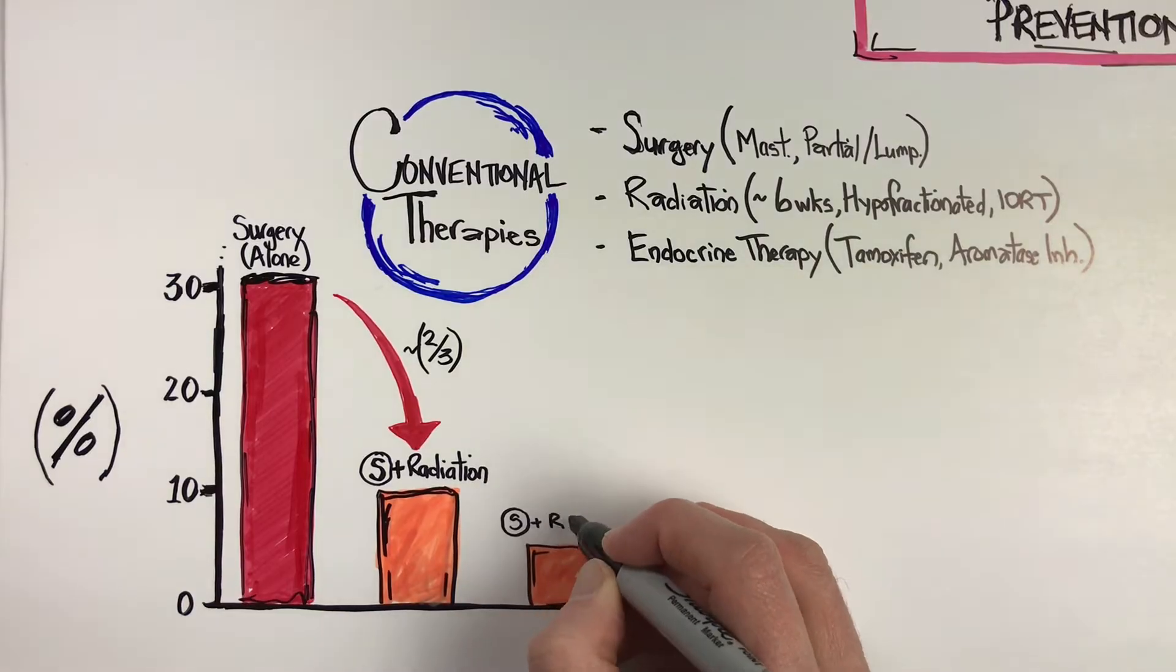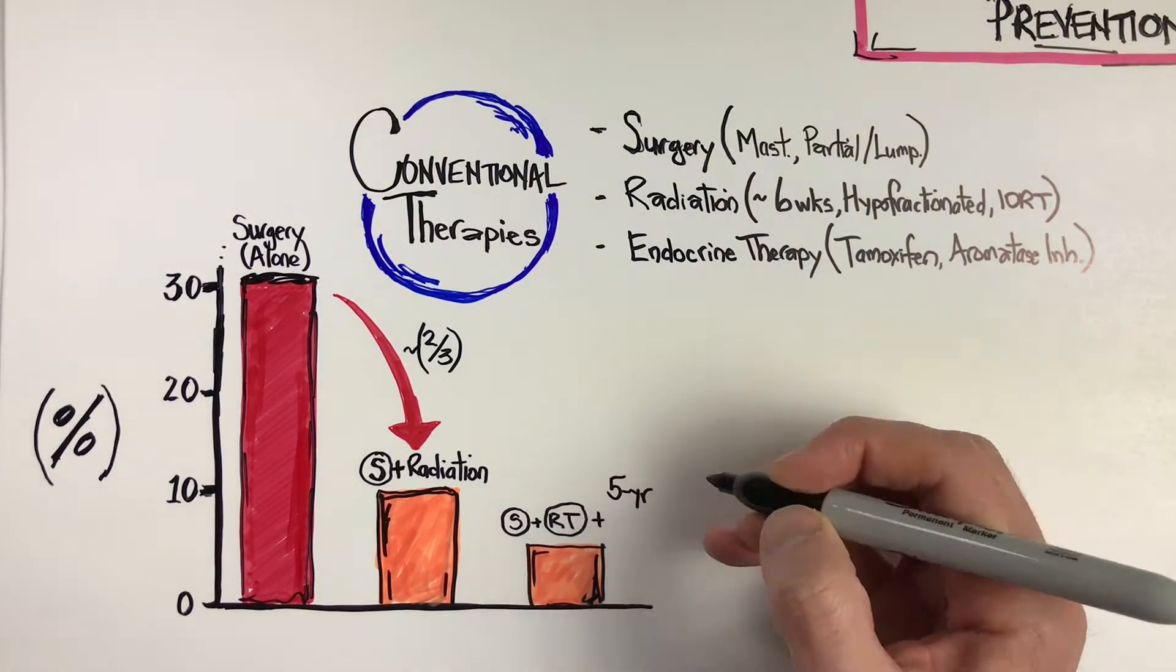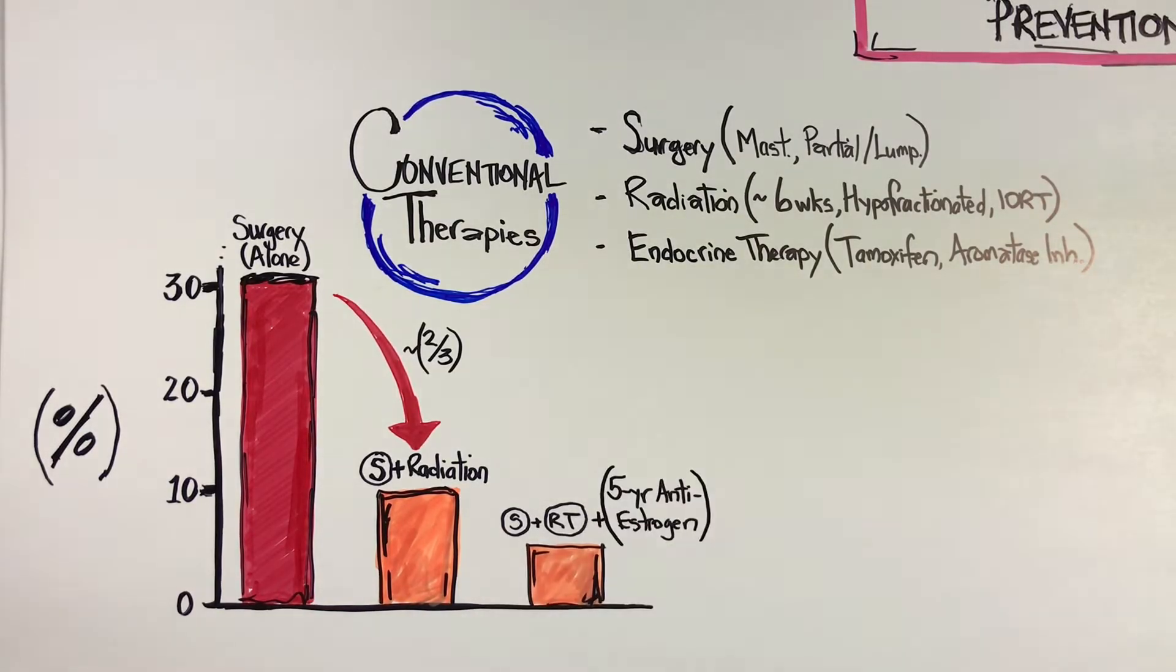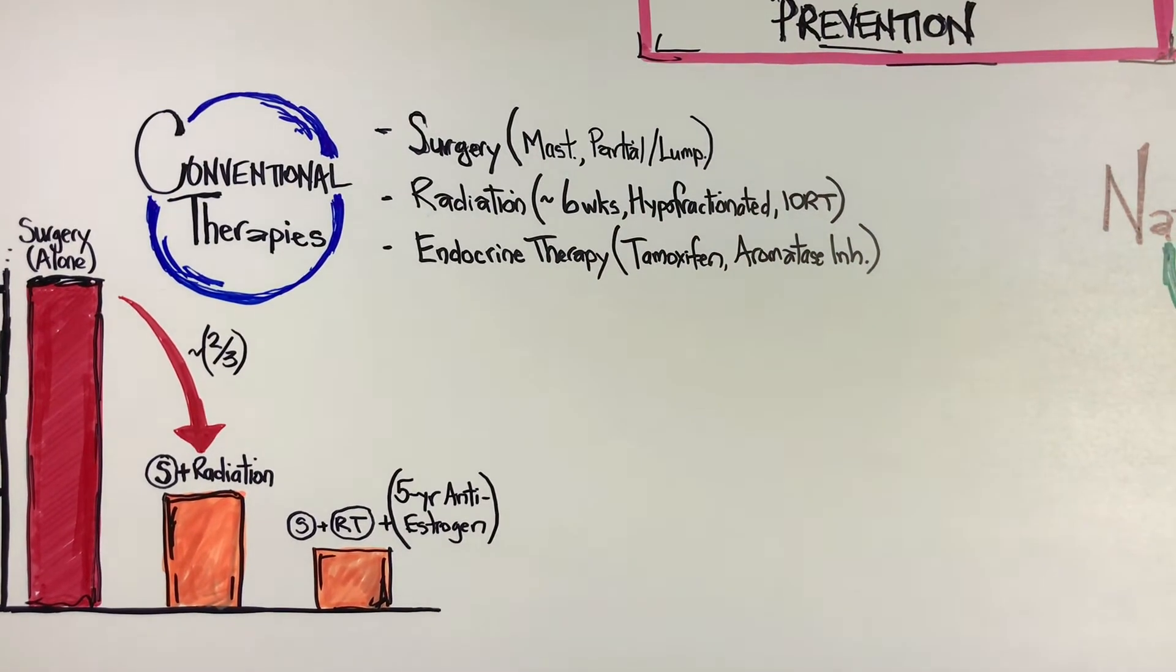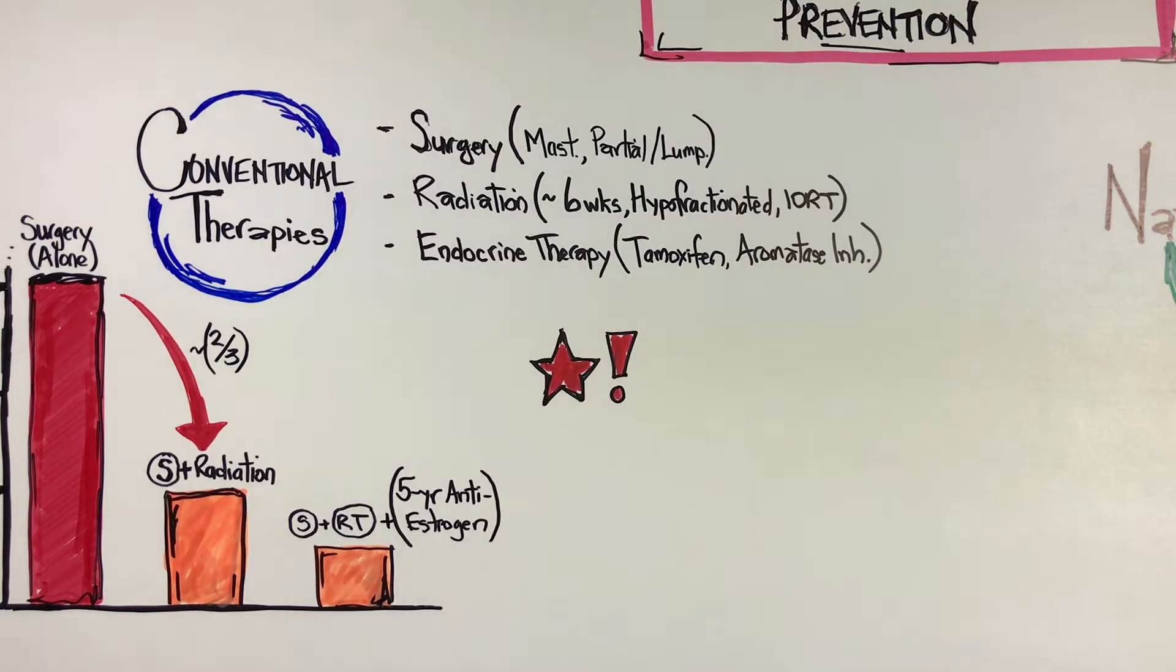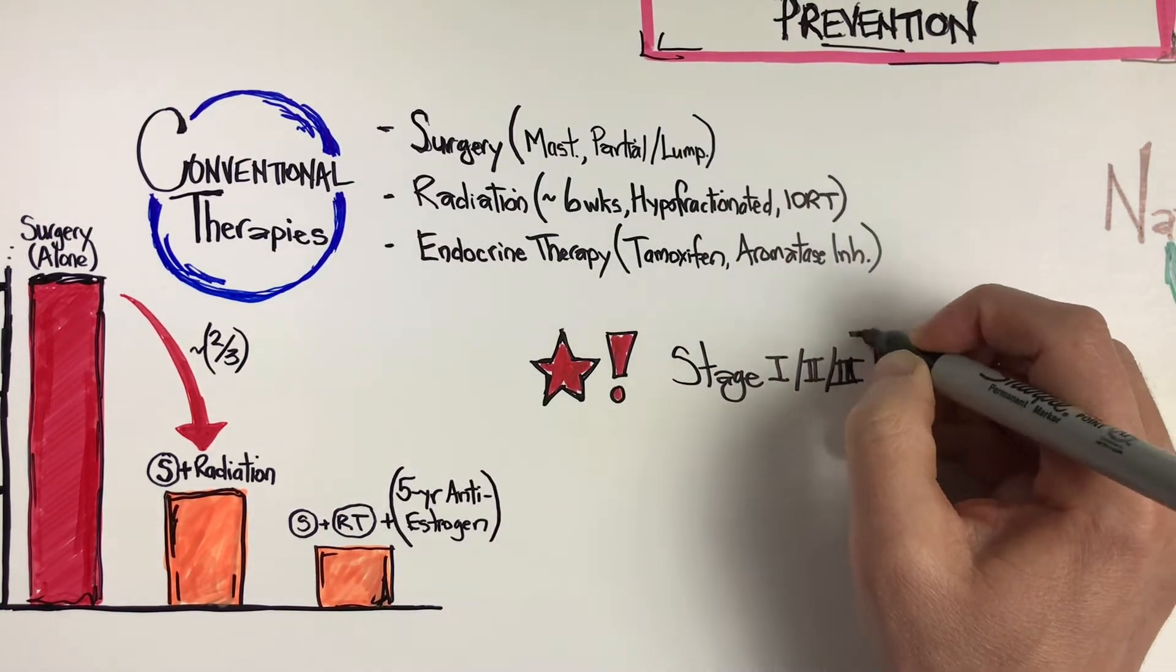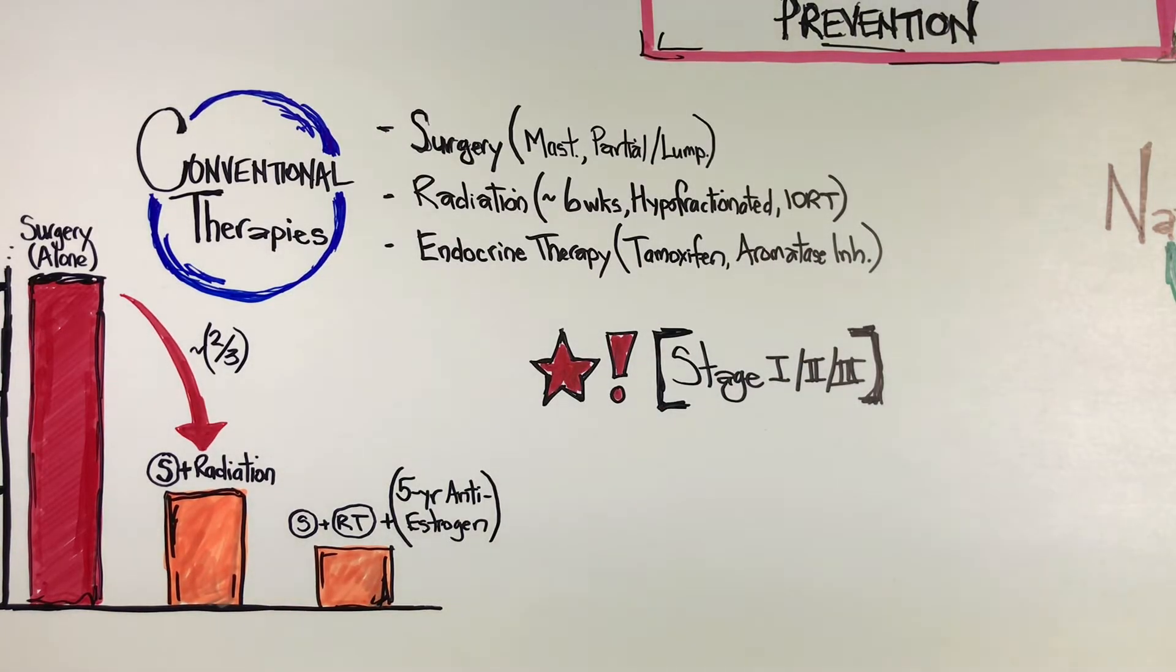After that, especially in estrogen receptor positive cases when surgery and radiation is delivered, anti-estrogen endocrine therapies are also recommended. They can usually drop the remaining risk by another half of what's remaining, so maybe from 10 percent down to about five percent. These therapies are very important and critical in these early stages one, two, and three.